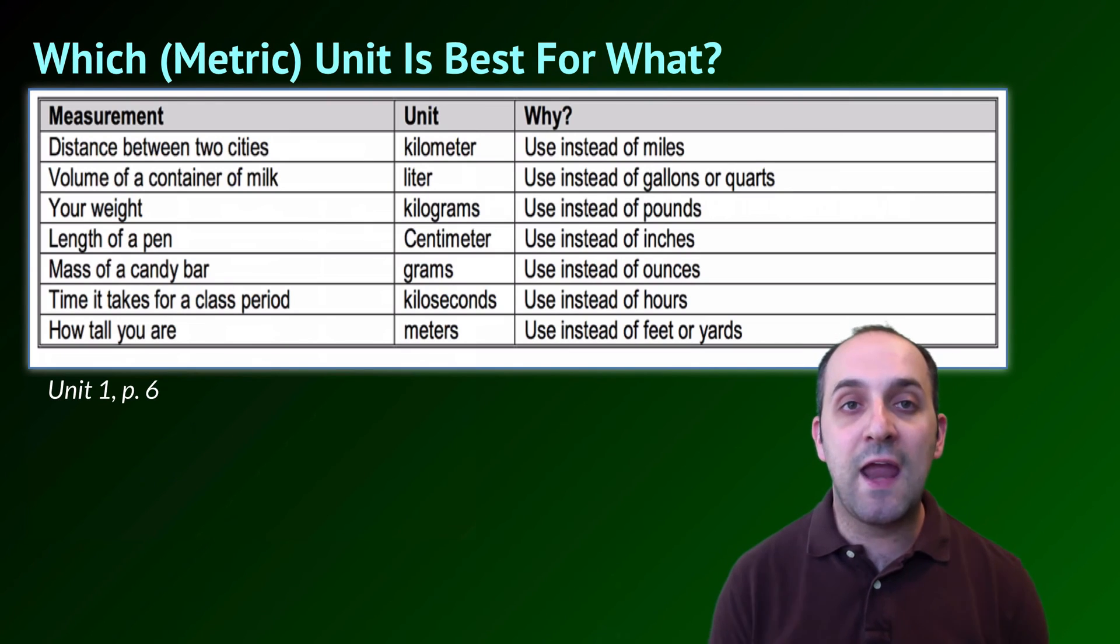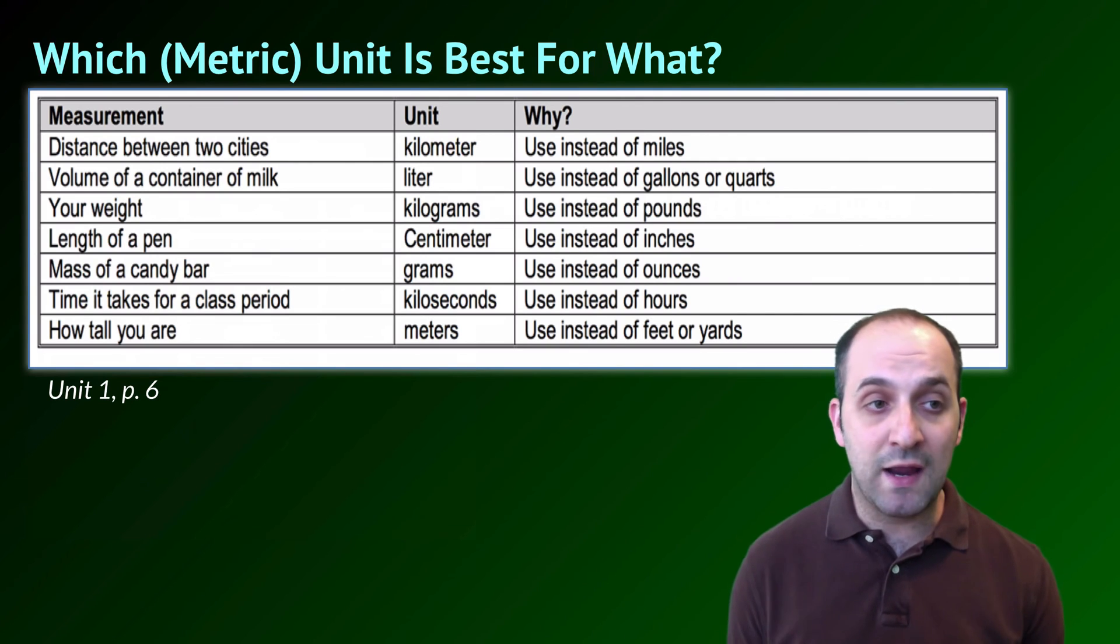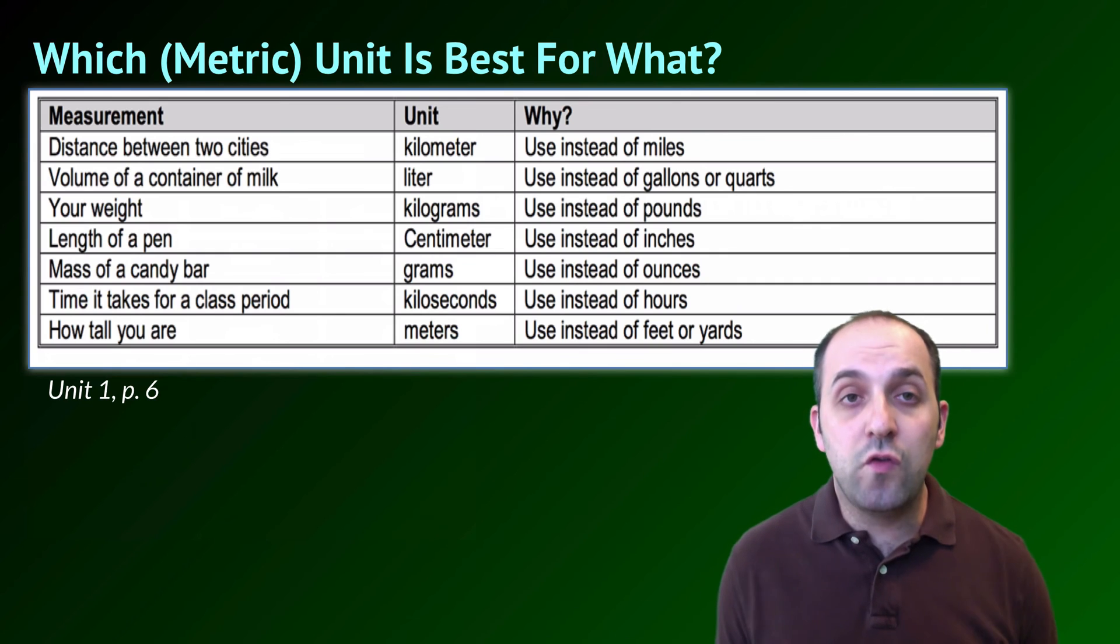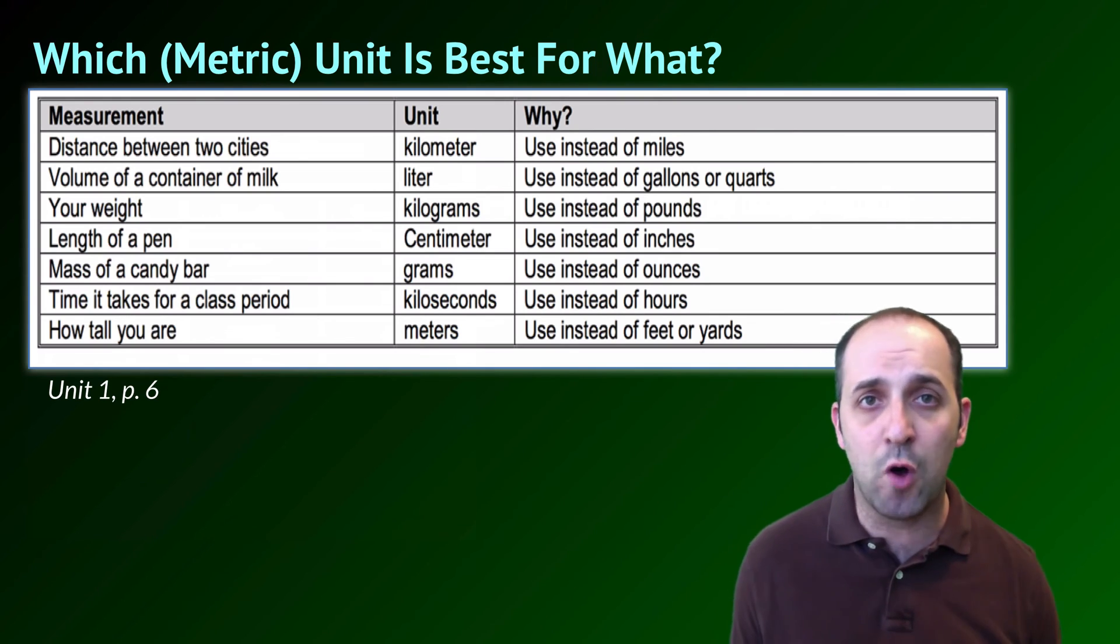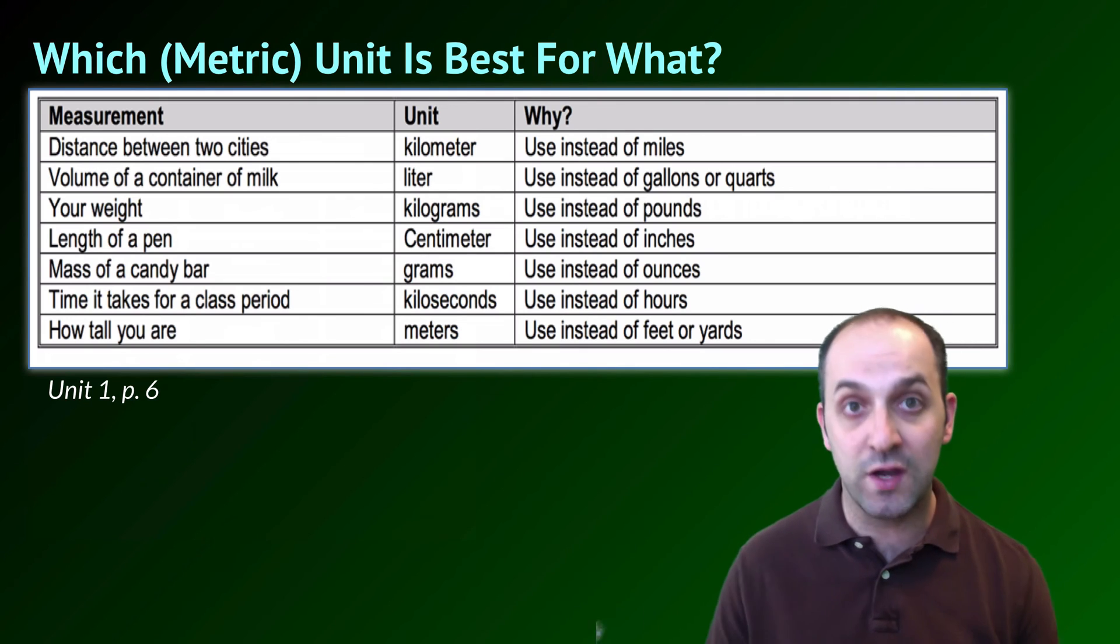You want to start to get a handle of which metric unit is best for what. So, on page six of your unit one packet, you'll see some examples of the appropriate measurement to use. So, yeah, you could use a unit like a meter to measure the distance between two cities, but that would kind of be like the equivalent of using feet to measure the distance between two cities, and as we know, that unit is a little bit too small for that task. It's a good idea to take a look at this list of which unit to use for what and get a good handle on why it is appropriate for that particular circumstance.